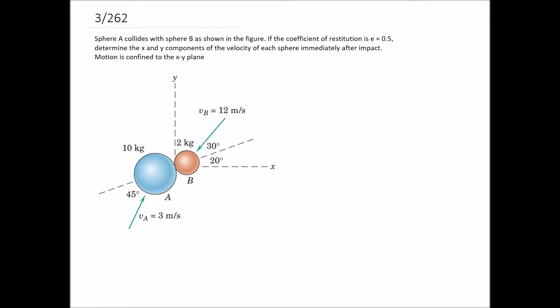Sphere A collides with sphere B as shown in the figure. If the coefficient of restitution is 0.5, determine the x and y components of the velocity of each sphere immediately after impact. Motion is confined to the xy plane.